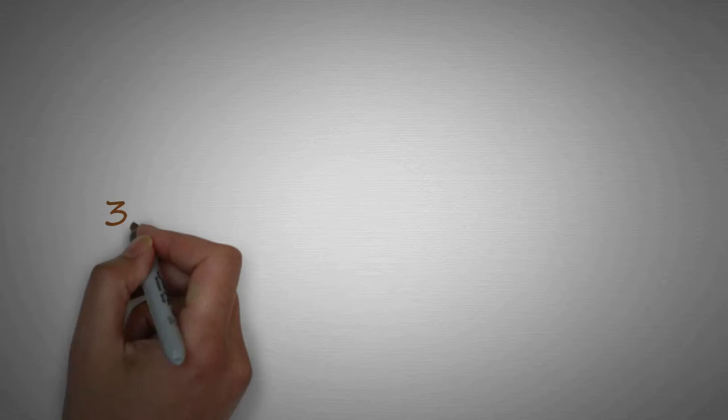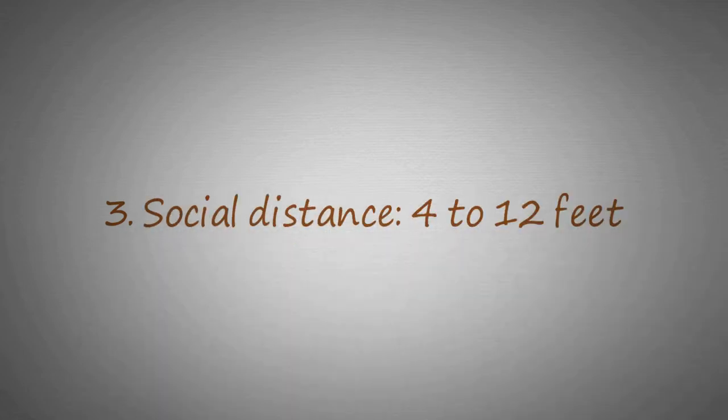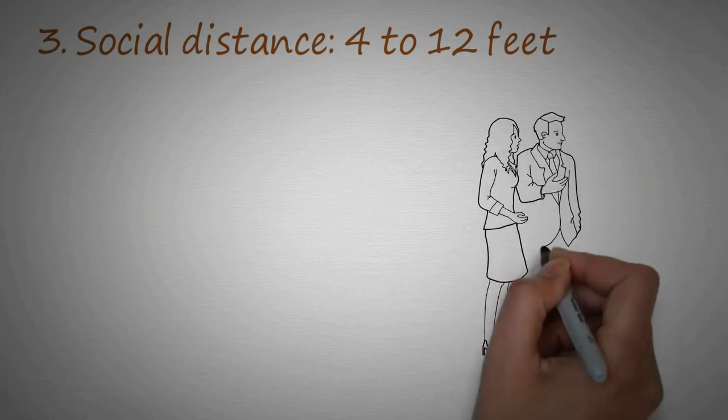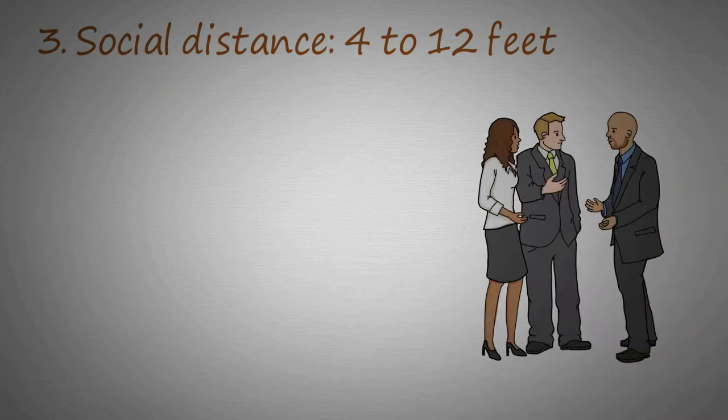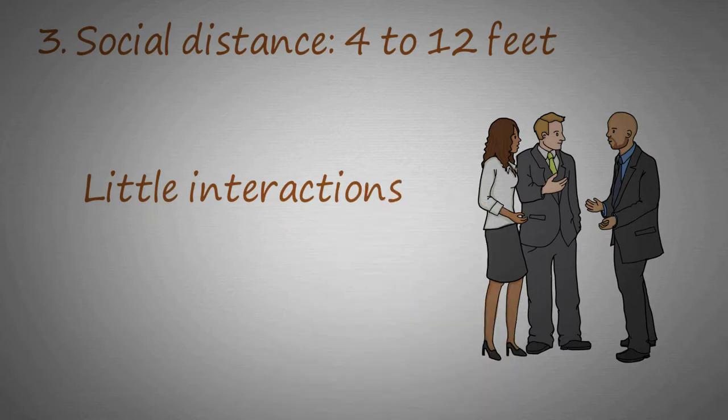The third one is social distance, which ranges from 4 to 12 feet. This is for interactions among acquaintances. We know a little bit about them, but we can work with them.